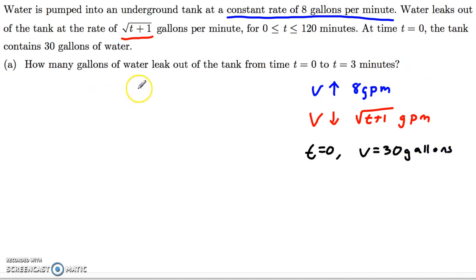So the first question is how many gallons of water leak out of the tank from t equals 0 to t equals 3. Well, water's going in 8 gallons per minute. It's coming out at a rate of square root of t plus 1 gallons per minute. So the water that leaks out is going to be the integral of the rate that it's leaking. So if it's leaking at t plus 1 gallons per minute, then if we integrate that from 0 to 3, that's going to give us, dt of course, that'll give us the amount of water that leaks out. This is what leaks out.